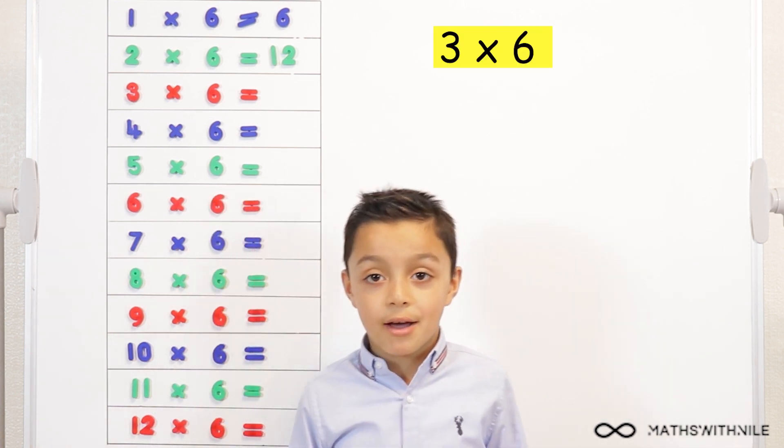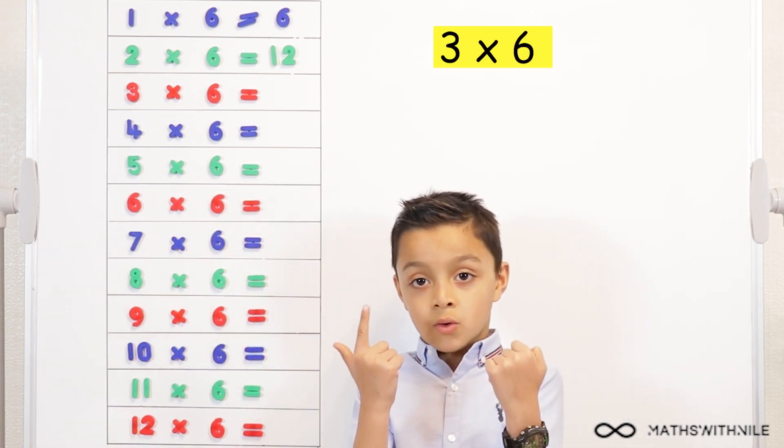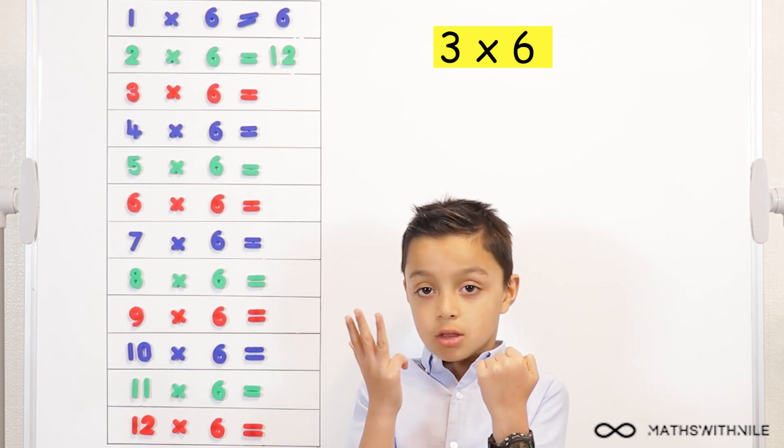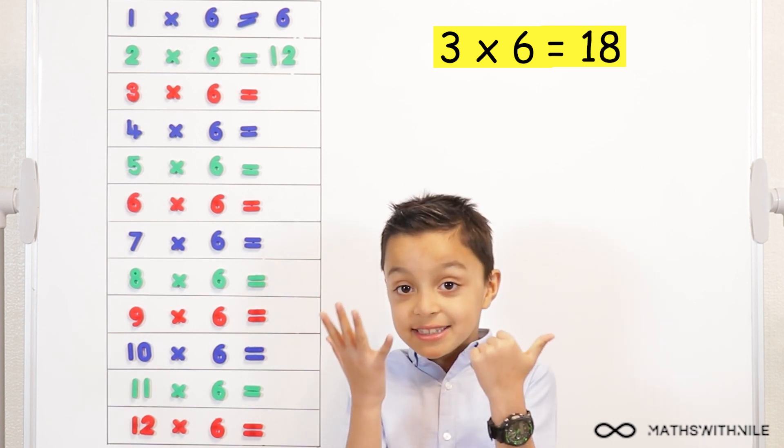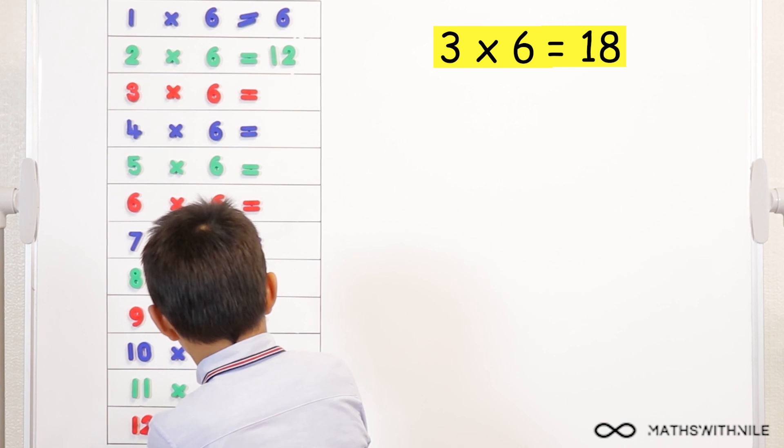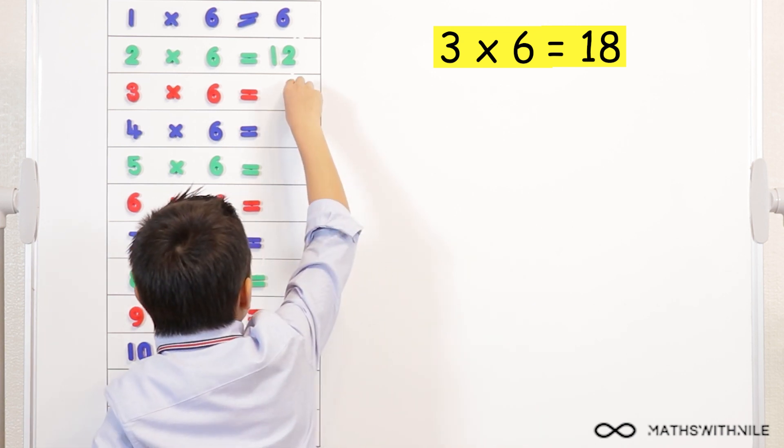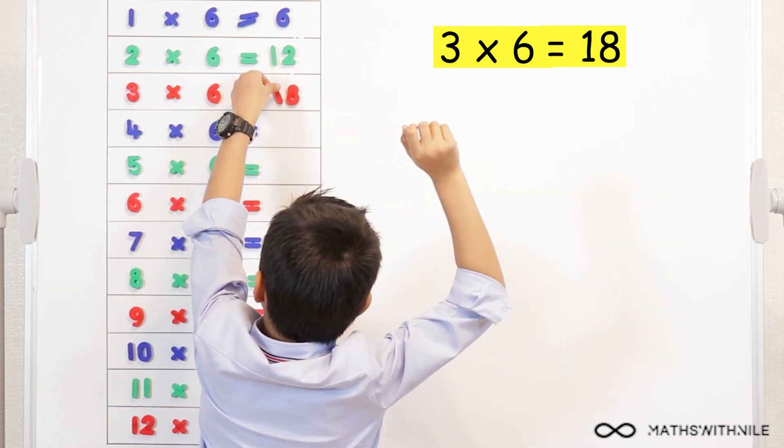And then three times six. Twelve, thirteen, fourteen, fifteen, sixteen, seventeen, eighteen. So, the answer is eighteen.